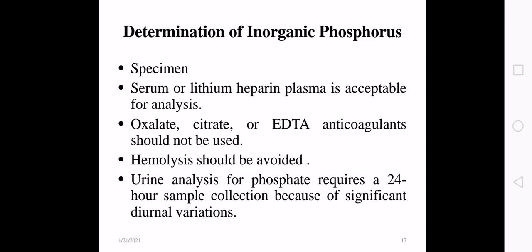For inorganic phosphate determination, serum or lithium heparin plasma is acceptable. Oxalate, citrate, or EDTA anticoagulants should not be used. Hemolysis should be avoided. For urine phosphate, a 24-hour collection is required because of significant diurnal variation. If an electrolyte is intracellular, hemolysis will affect its measurement, so hemolysis must be avoided for all electrolyte samples.